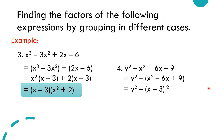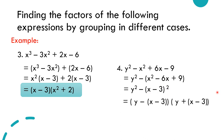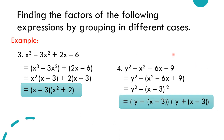Now we recognize y² minus (x minus 3)² as a difference of two squares, where the two square roots are y and (x minus 3). Applying the difference of two squares formula gives us two factors: (y minus (x minus 3)) times (y plus (x minus 3)). Therefore, the fully factored form of y² minus x² plus 6x minus 9 is (y minus x plus 3)(y plus x minus 3).